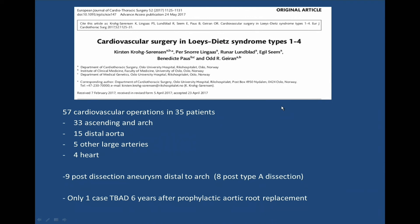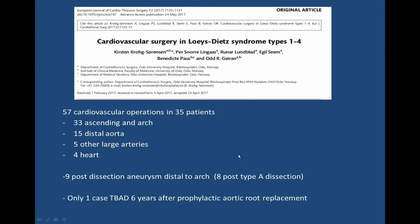From a registry in Norway, looking at 57 cardiovascular operations in 35 patients, there were nine post-dissection aneurysm distal repairs — but eight of those were post-type A dissections, and only one case was really T-BAD. So even when you have a fairly large registry of patients with a very rare disease, if you try to find out what to do specifically in T-BAD, you have a very hard time finding useful information.